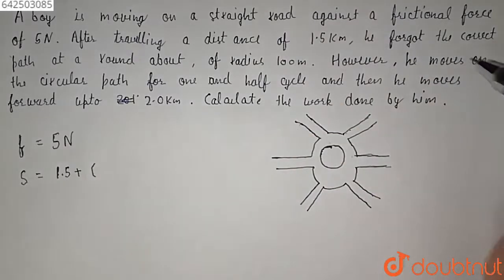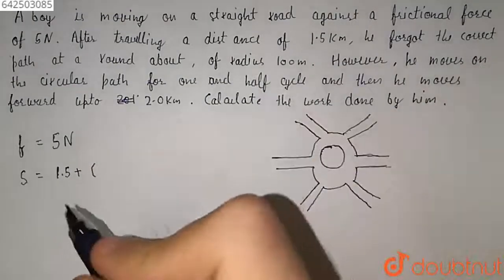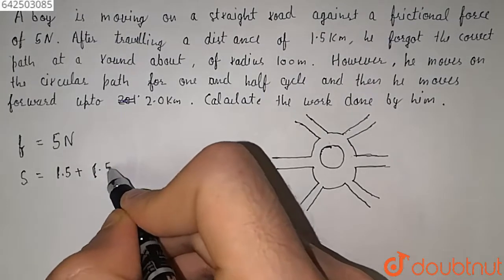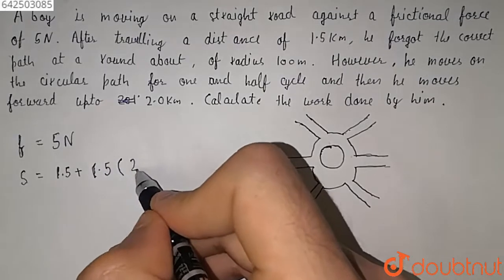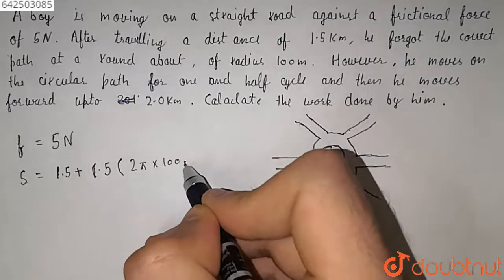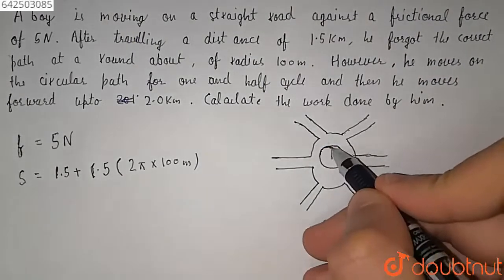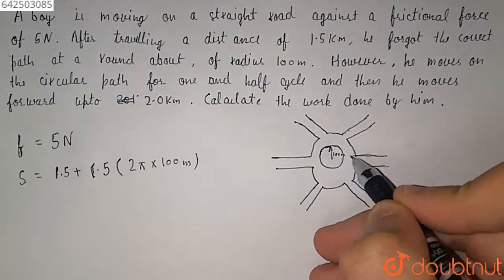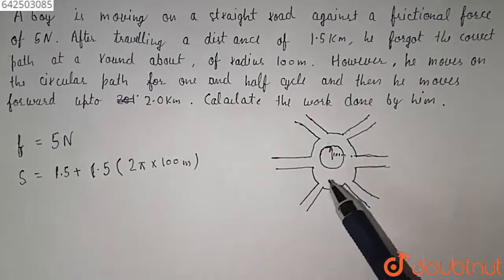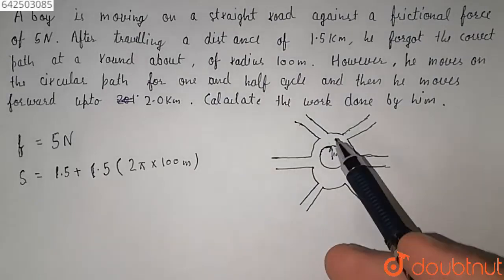1.5 into 2π into 100 meters. He forgot the correct path at a roundabout of radius 100 meters. This is because in 1.5 circles, he has covered 1.5 into 2πr, that is the circumference, and